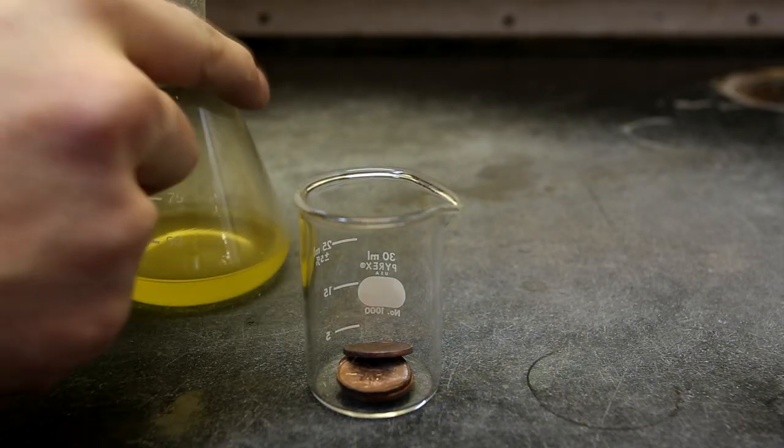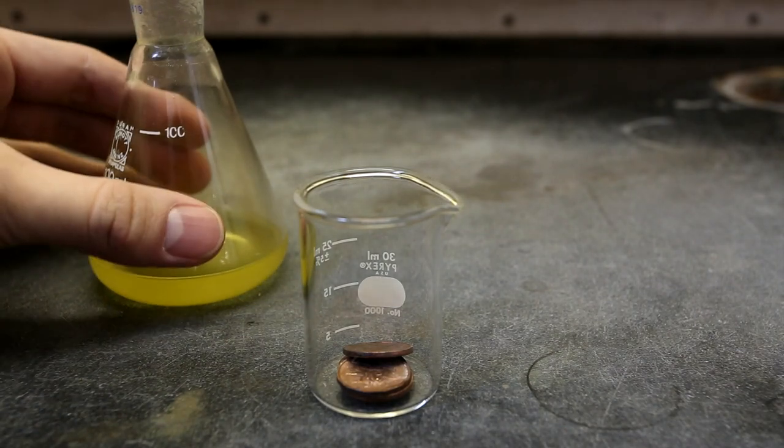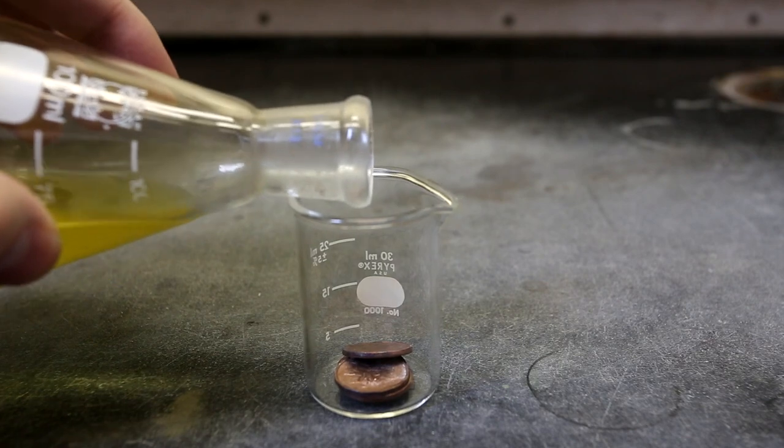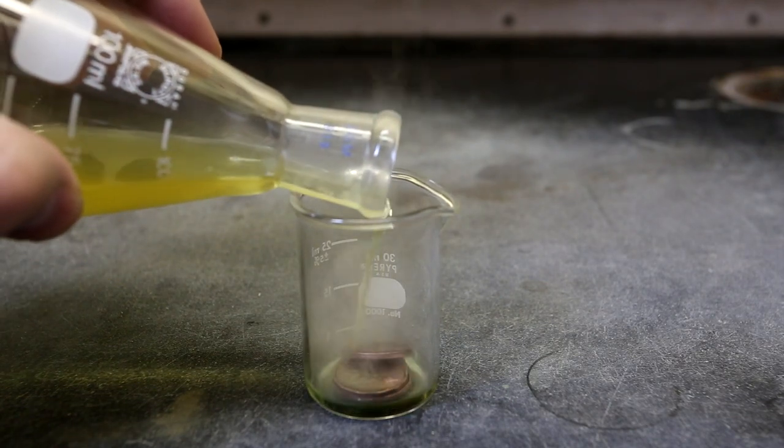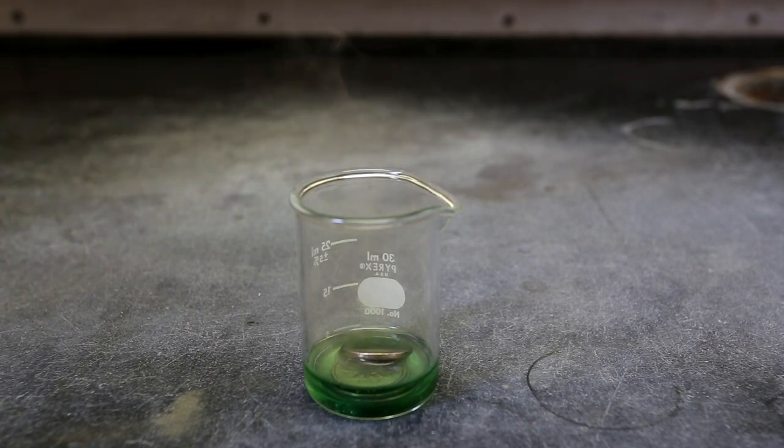To test the nitric acid, I pour it on a couple copper pennies. Nitric acid is one of the very few acids that will actually dissolve copper. However, when the nitric acid is added to the copper, you'll notice that there isn't a vigorous reaction occurring.